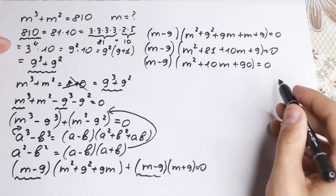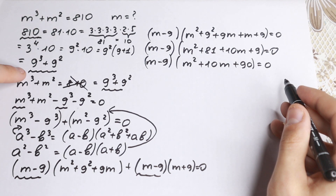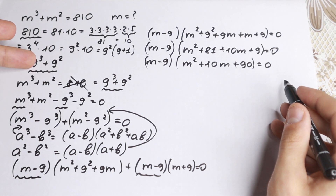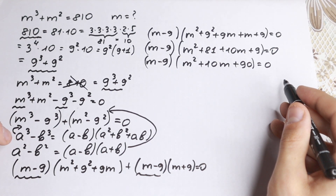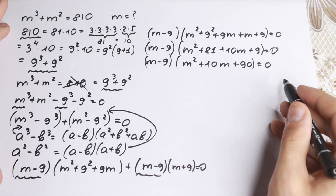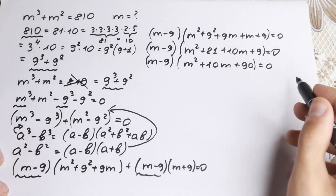I want to highlight this key insight: by expressing 810 as a sum of a cube and a square — that is, 9³ + 9² — we can directly apply the difference of cubes and difference of squares identities. This is the heart of the method, and I hope you enjoyed it. Now let's finish solving.